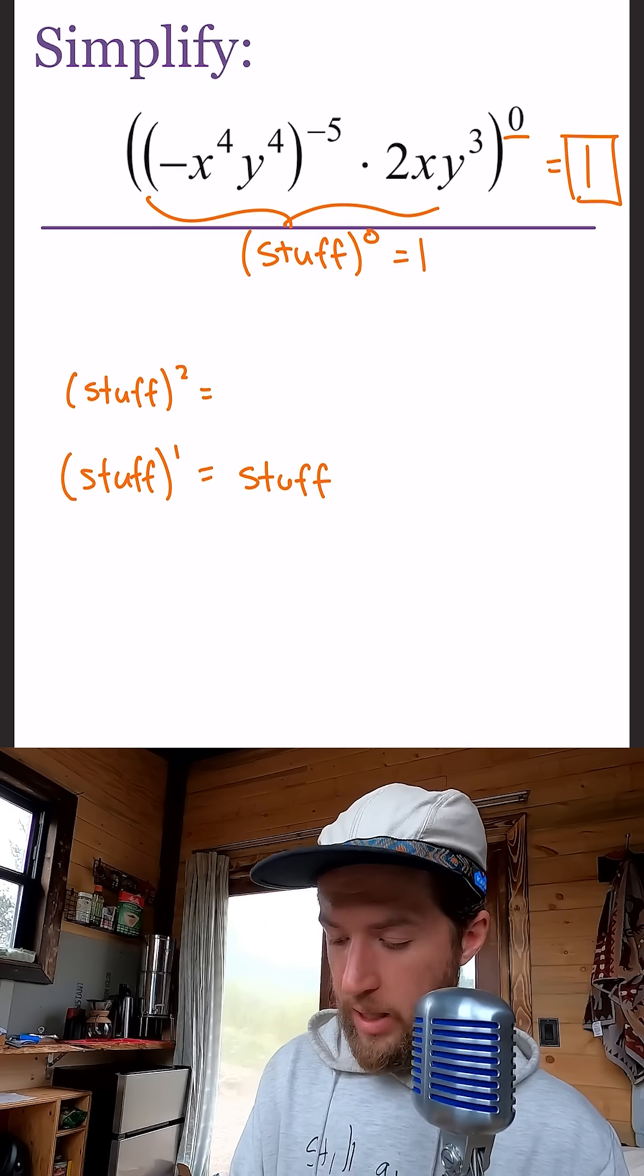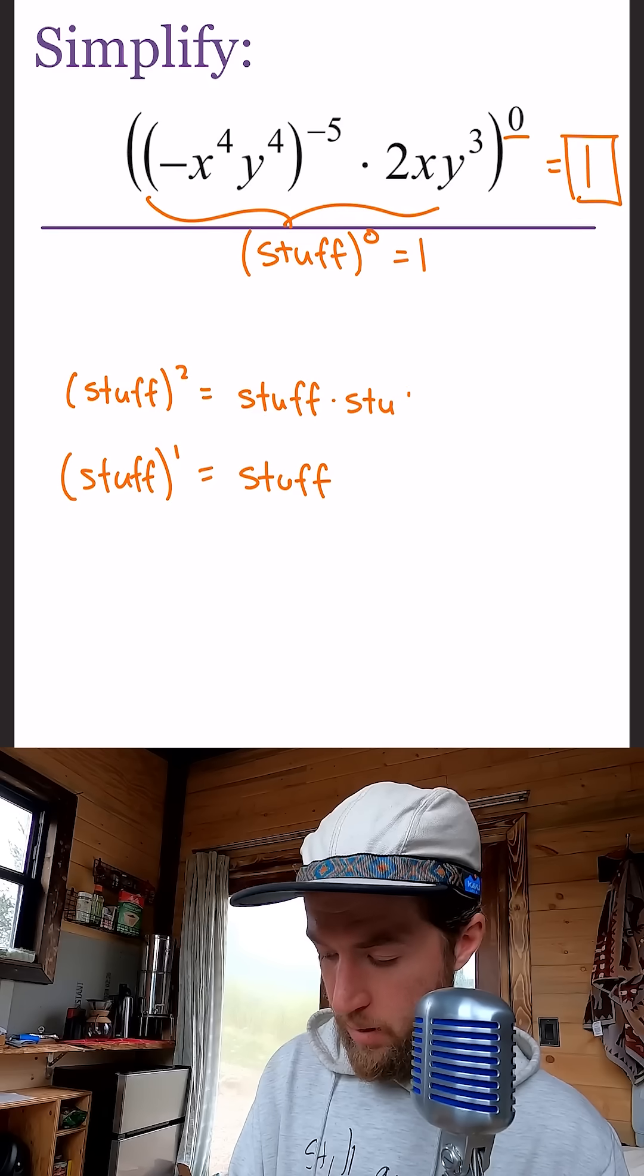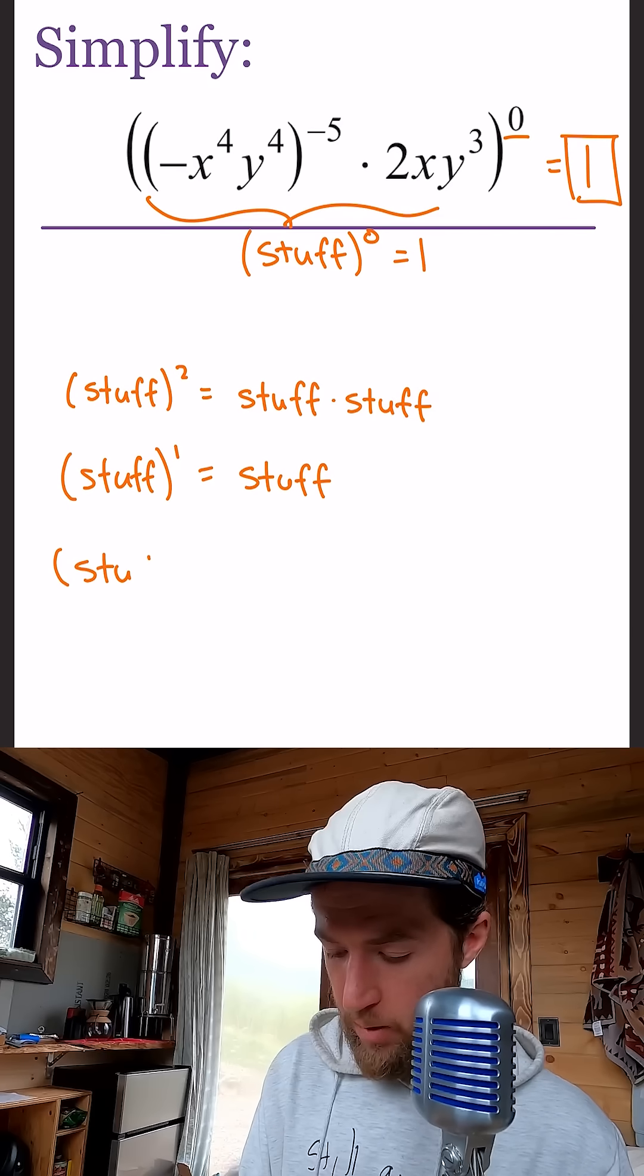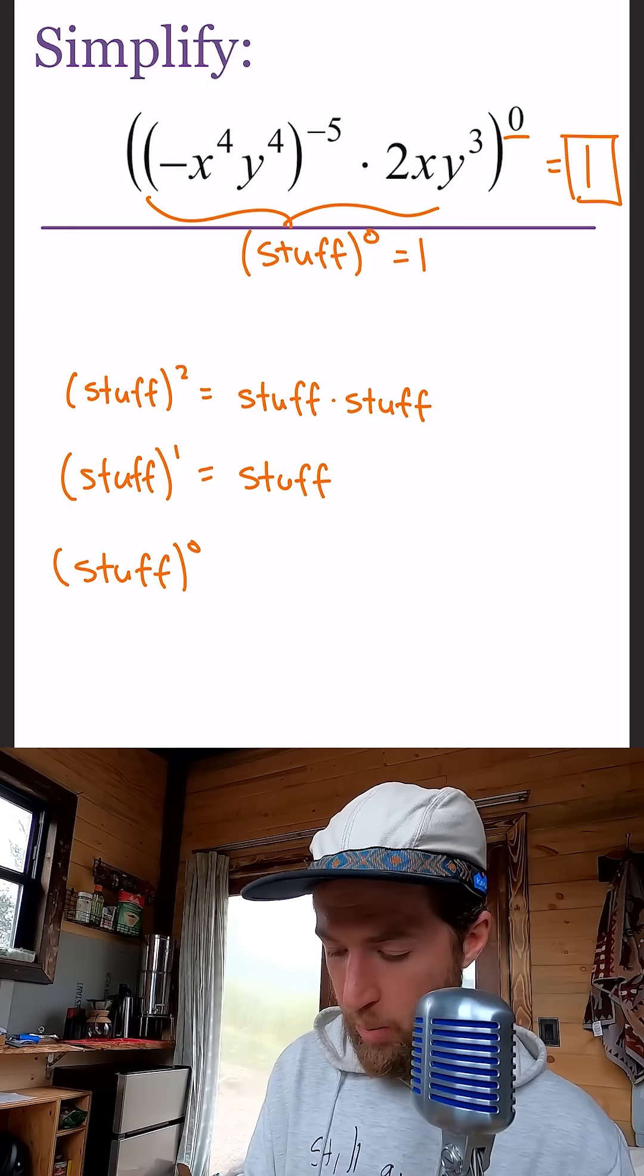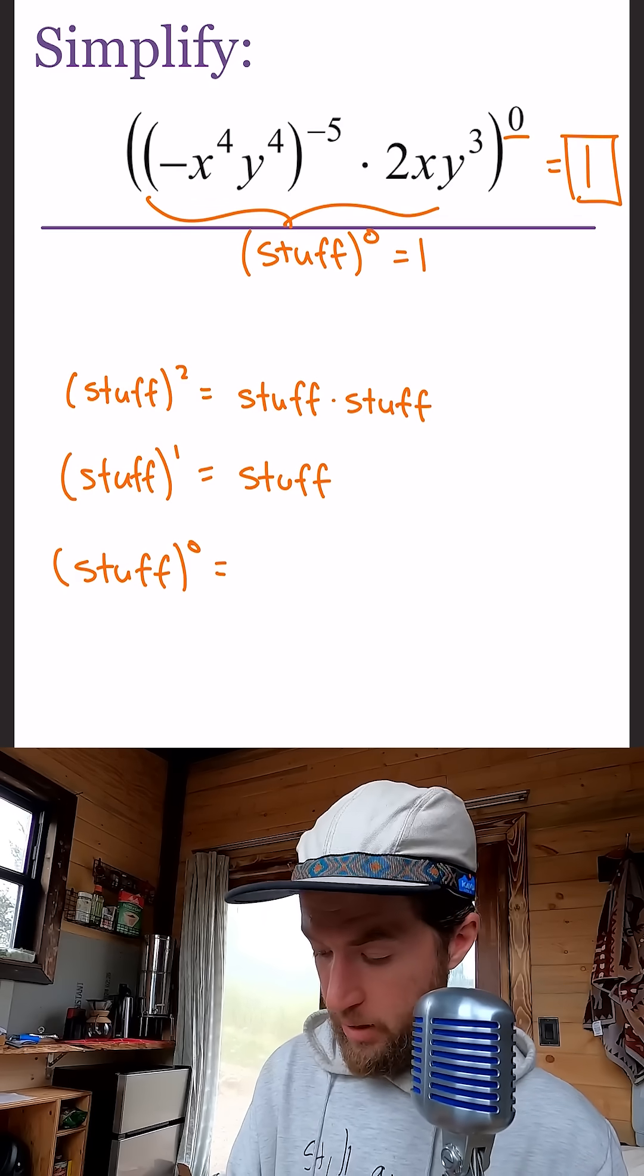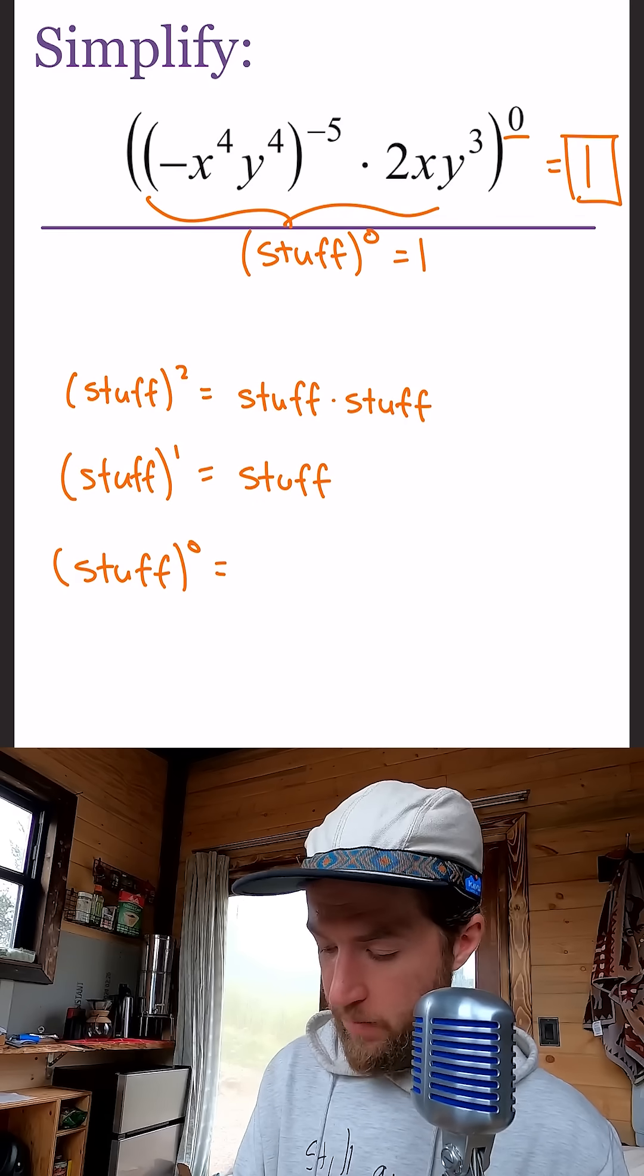We're going to take that stuff and we're going to multiply it by itself, so stuff times stuff. But what if we want to go down instead of up? Let's go down a power to the zeroth power. Well, instead of multiplying stuff by stuff to go up, how about we divide stuff by stuff to go down?